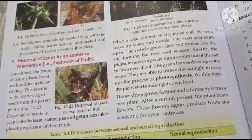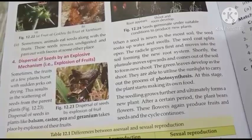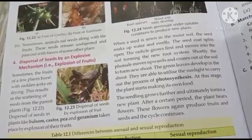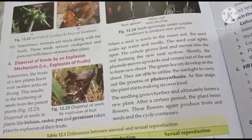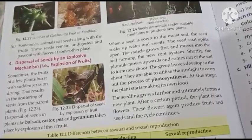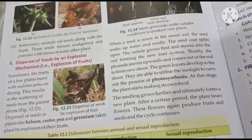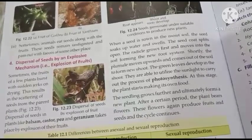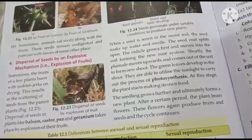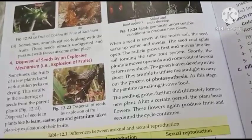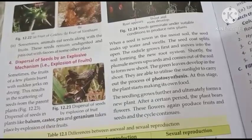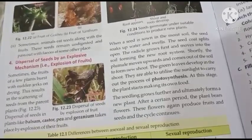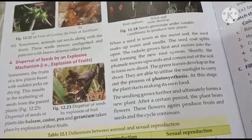Next: dispersal of seeds by an explosive mechanism, that is explosion of fruits. कई बार जो fruits होते हैं वो burst हो जाते हैं, फट जाते हैं। फटने के कारण seeds बिखर जाते हैं — scatter हो जाते हैं। Sometimes the fruits of a few plants burst with sudden jerks on drying. This results in the scattering of seeds from the parent plants.